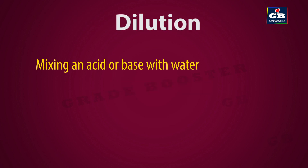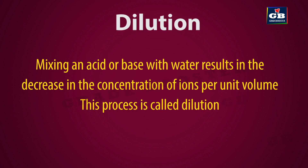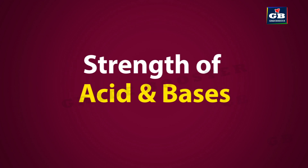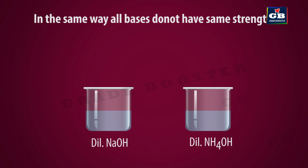Dilution: if we mix an acid or base with water, it results in the decrease in the concentration of ions per unit volume — this process is called dilution. Strength of acids and bases: all acids do not have the same strength, and in the same way, all bases do not have the same strength.